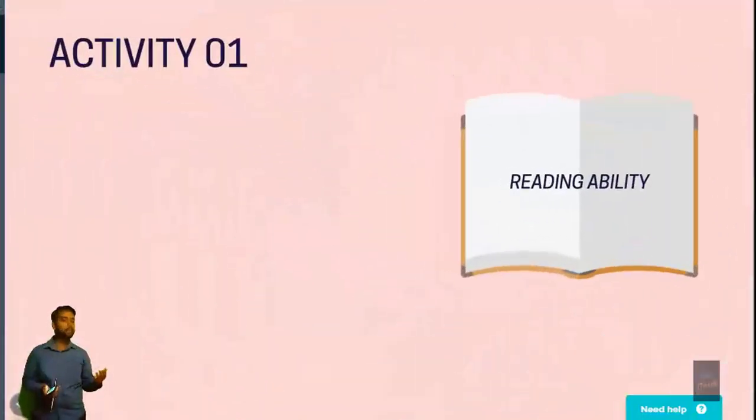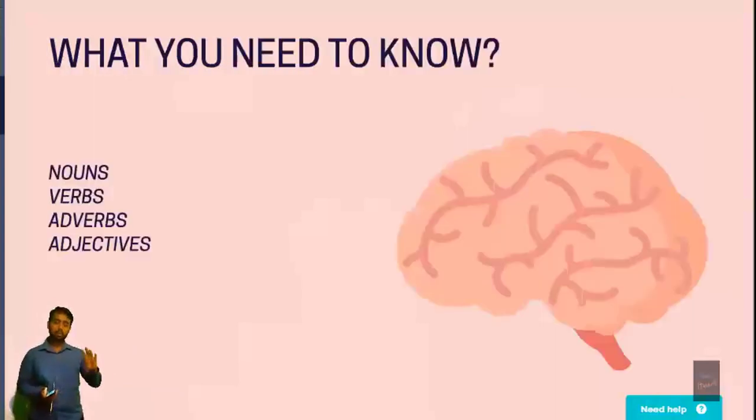Yesterday we spoke about four main skills, which are listening, speaking, reading, and writing. If you can read quite well, you will be able to complete this activity. Now, when reading, what are the skills that you need? What are the things that you mostly need to complete this activity? It's very easy. You need four things.